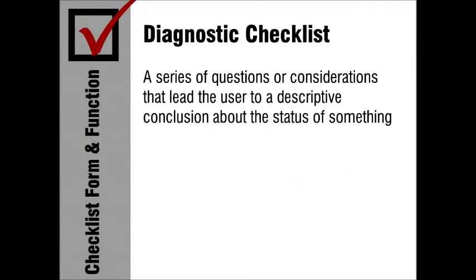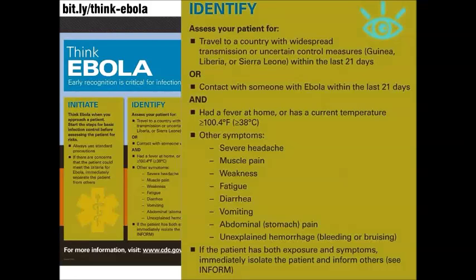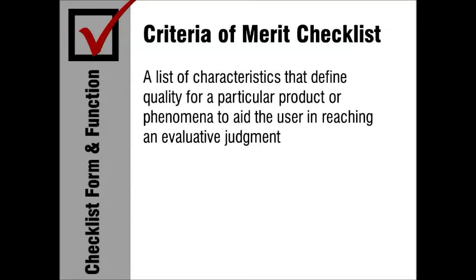A diagnostic checklist is a tool that helps the user to reach a descriptive conclusion about something. Diagnostic checklists are commonly used for screening people for social and behavioral health problems — one example is a screening tool for post-traumatic stress disorder. Your auto mechanic may even use a diagnostic checklist to narrow down the causes of a problem your car is having. A component of this Think Ebola checklist is a diagnostic tool: it's comprised of a series of checkpoints to determine if a person is at risk for having Ebola.